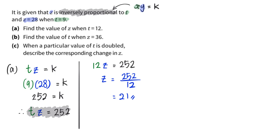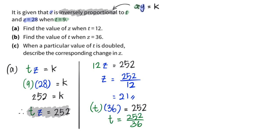Using the same equation, I am now given z equals 36, and this again equals 252. So I can find the value of t: t equals 252 divided by 36, which gives t equals 7. This is the answer for part b.